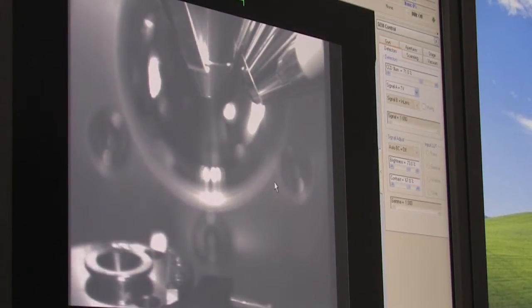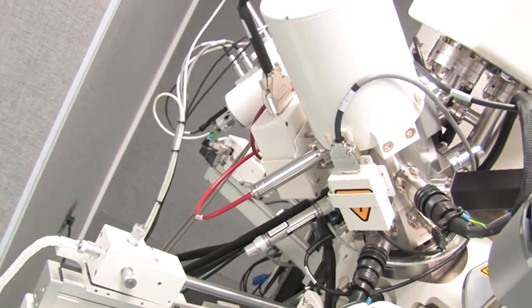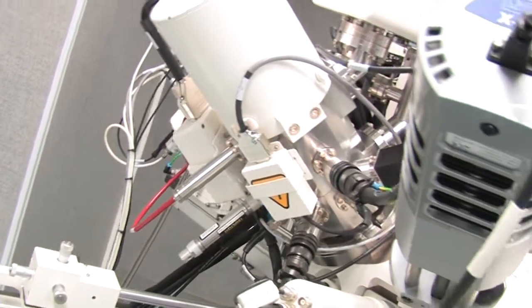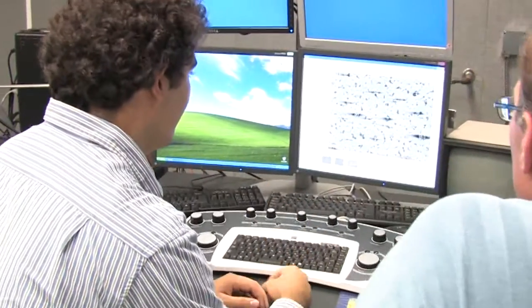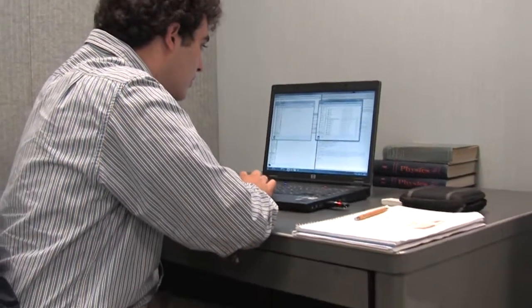We used the focused ion beam, the FIB, and it can nanomachine the sample. It cuts away slices almost like a loaf of bread from the sample, and then you can take an image of each slice. We use a computer in the other room to compile them all into a three-dimensional image.